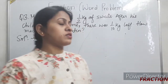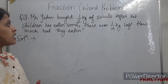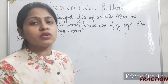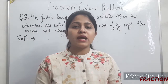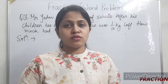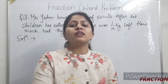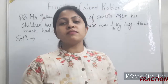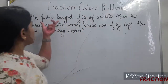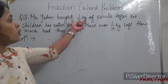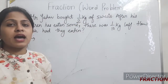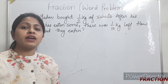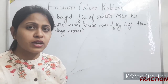Let's come to question number three. Mr. Yado bought 1 by 2 kg of sweets — that is half kg of sweets. As mentioned in our first fraction video, 1 by 2 is called half. So Mr. Yado bought half kg of sweets.